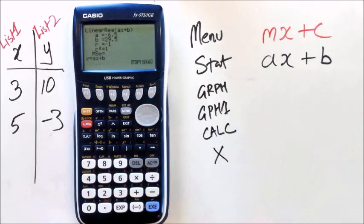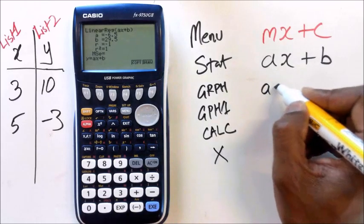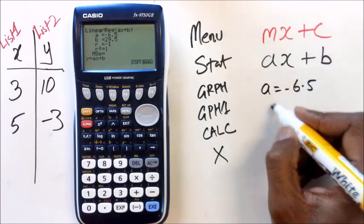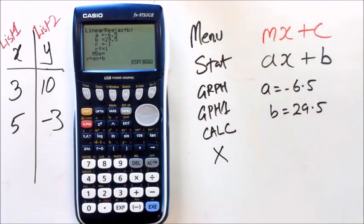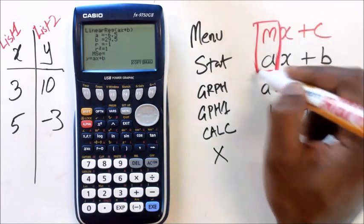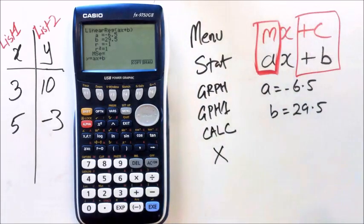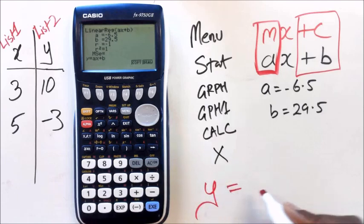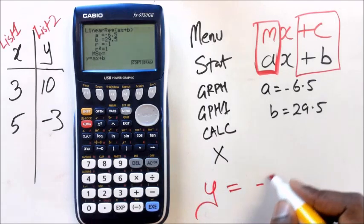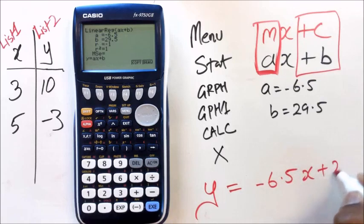When you click on that, you'll be given two values, you've got values for A and you've got values for B which means because A equals negative 6.5 and B equals 29.5, you kind of just match it up to your two values. So the equation of this particular straight line is going to be Y equals to negative 6.5X plus 29.5.